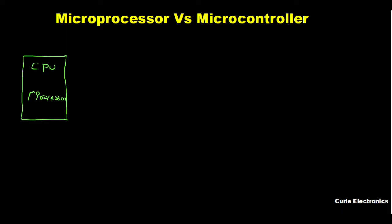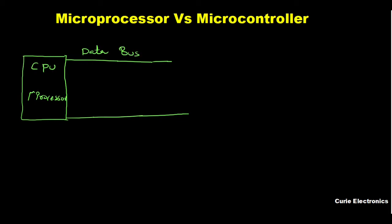A microprocessor will have two buses — one is the address bus and one is the data bus. That is all a microprocessor will be having: just a CPU, an address bus, and a data bus. That's the only part in a microprocessor.